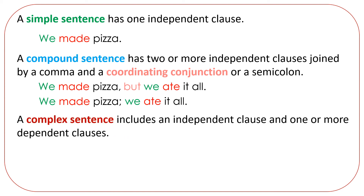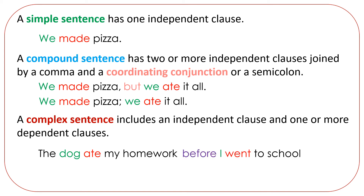A complex sentence includes an independent clause and one or more dependent clauses. The dog ate my homework. That's an independent clause — it stands by itself. Before I went to school. That's a dependent clause — it starts with the subordinating conjunction before. Together, though, we have a complex sentence: The dog ate my homework before I went to school.